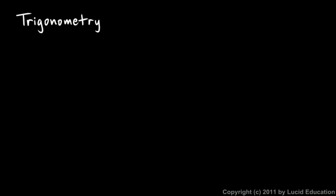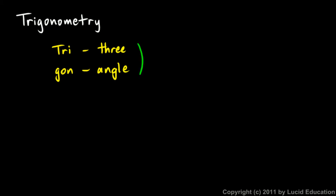Let's start by talking about the word and what it means. You can tell what it means by looking at the different pieces. 'Tri' obviously means three, and then 'gon' — that's the Greek word for angle. So we're talking about three angles. When you're dealing with something with three angles, that's obviously a triangle.